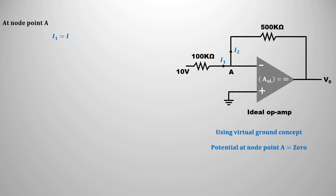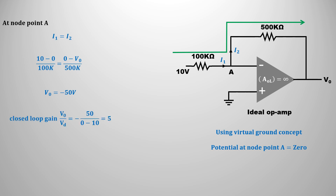Now applying Kirchhoff's node analysis at node point A, current I1 will be equal to current I2, because the input impedance of the ideal operational amplifier is infinite, so the current goes directly to the feedback resistance at the node point. Current I1 will have the value (10 - 0) / 100k and current I2 will have the value (0 - V0) / 500k. Solving this gives an output voltage of -50V. Notably, the open-loop gain of the ideal operational amplifier is infinite, but the closed-loop gain is 5. This shows how the virtual ground concept is very helpful in solving numerical problems.